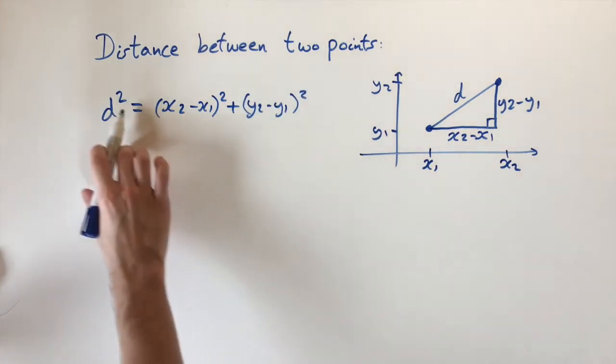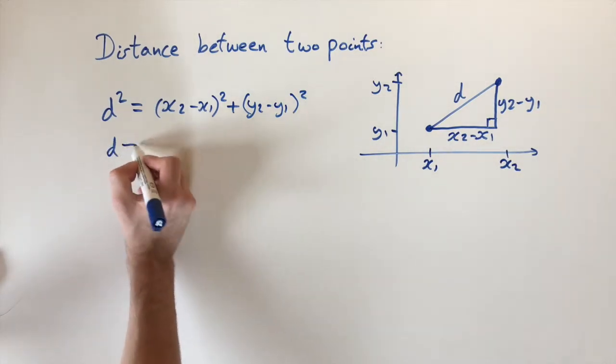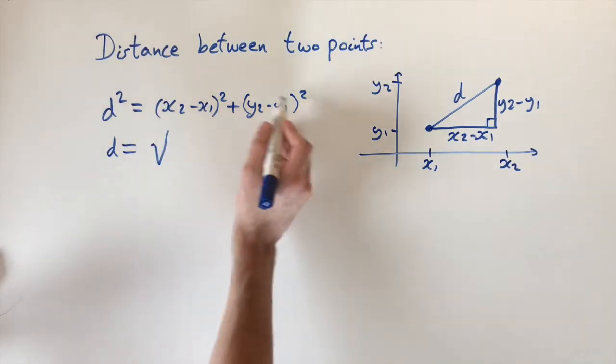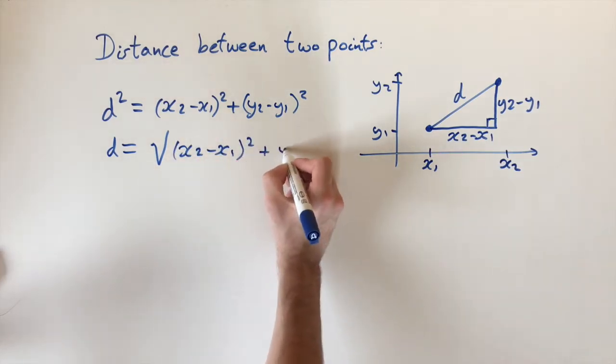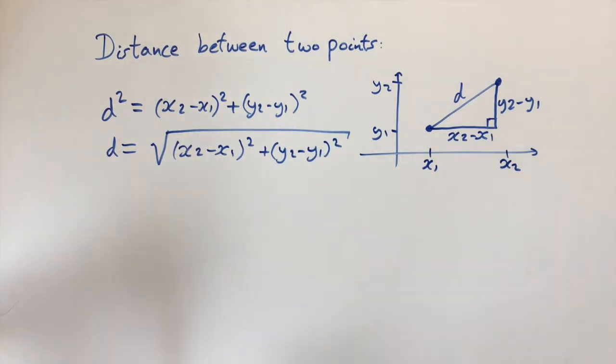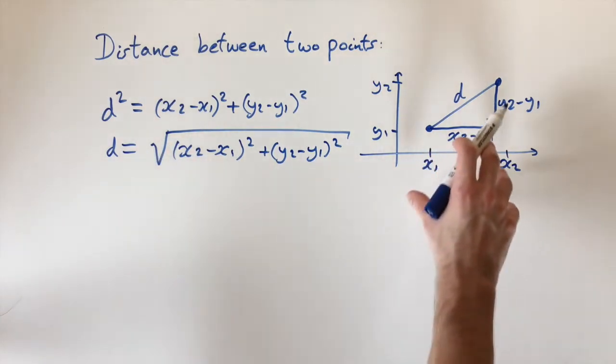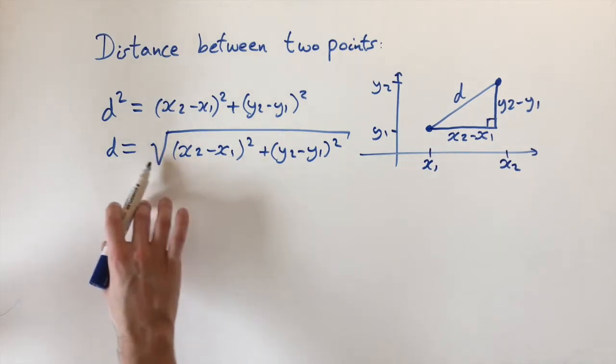And then if we just want to get in terms of d, we can just take the positive square root. So d equals the square root of x2 minus x1 squared plus y2 minus y1 squared. And we just want the positive square root because we tend to think in positive distances. We don't really want a negative distance.